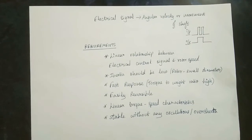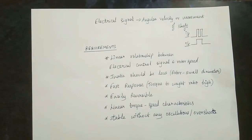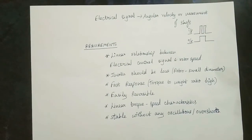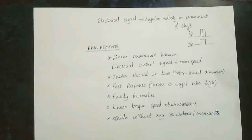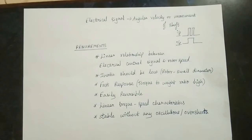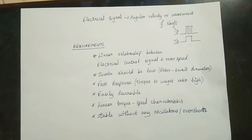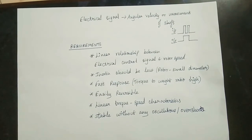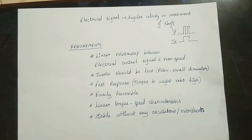Fast response is important. The torque is normal, and the torque-speed relationship is linear. The torque should be low enough to allow quick stopping. Torque-speed linearity is a key requirement. The peak and overshoot should be correct. These are the most important requirements for a servo motor.